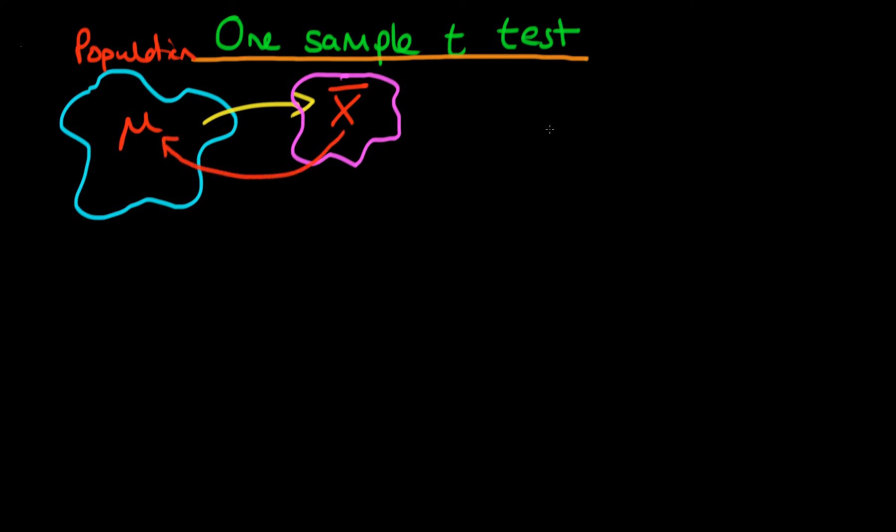In the one-sample t-test, what we'd actually like to do is we would like to test some sort of null hypothesis about the population mean mu. So our null hypothesis might be that mu is equal to some sort of value, mu naught. But because we don't actually have the population mean mu, we have to carry out that test on our estimated value of the population mean, which in the circumstance of having one sample is just the sample mean.